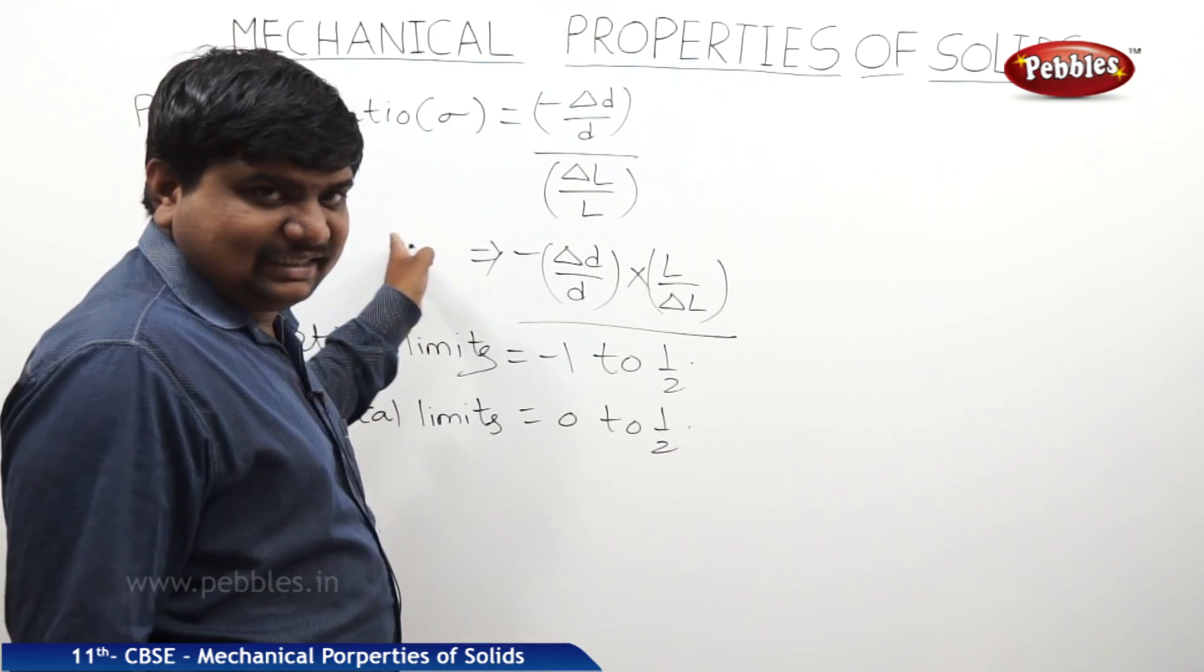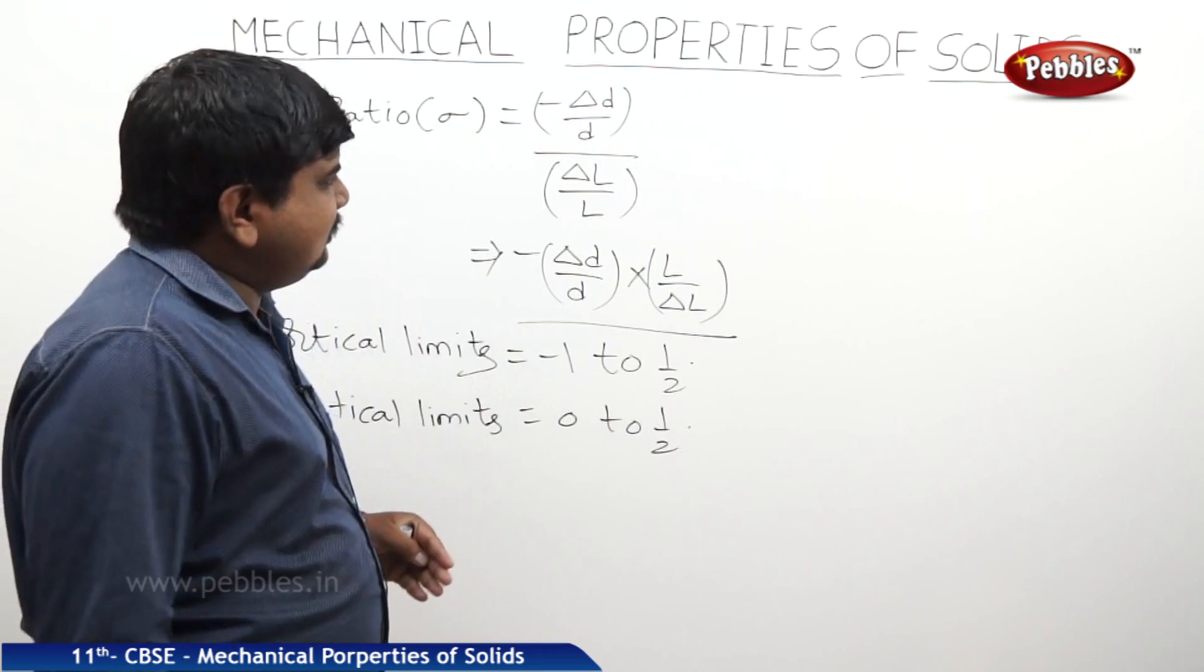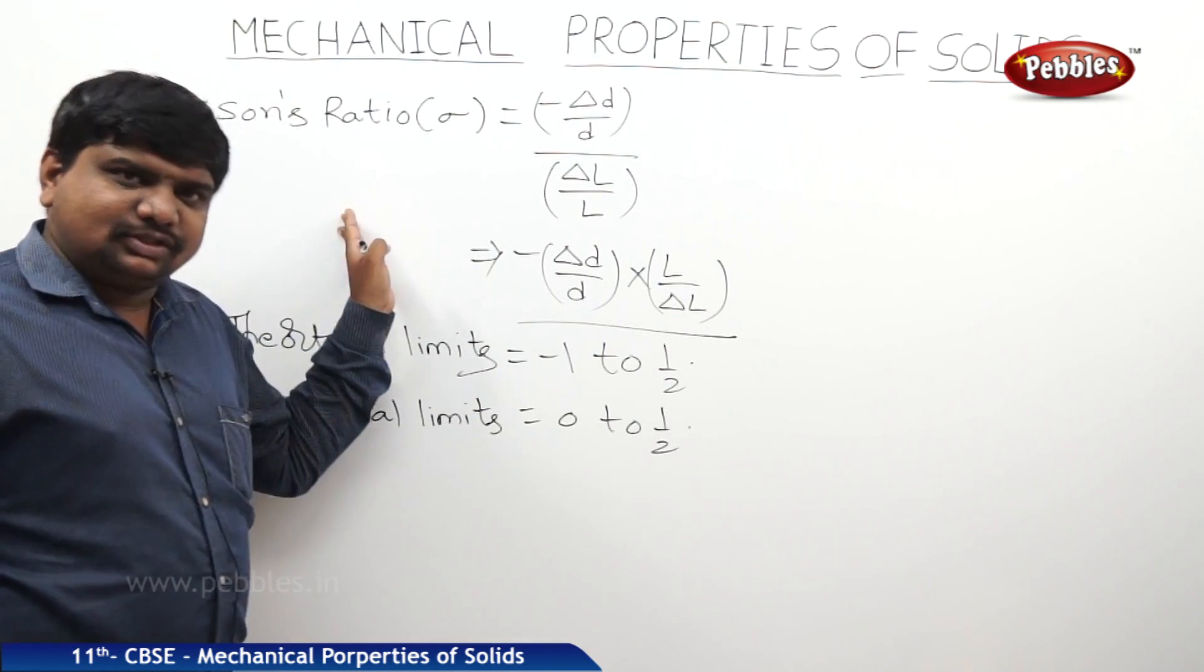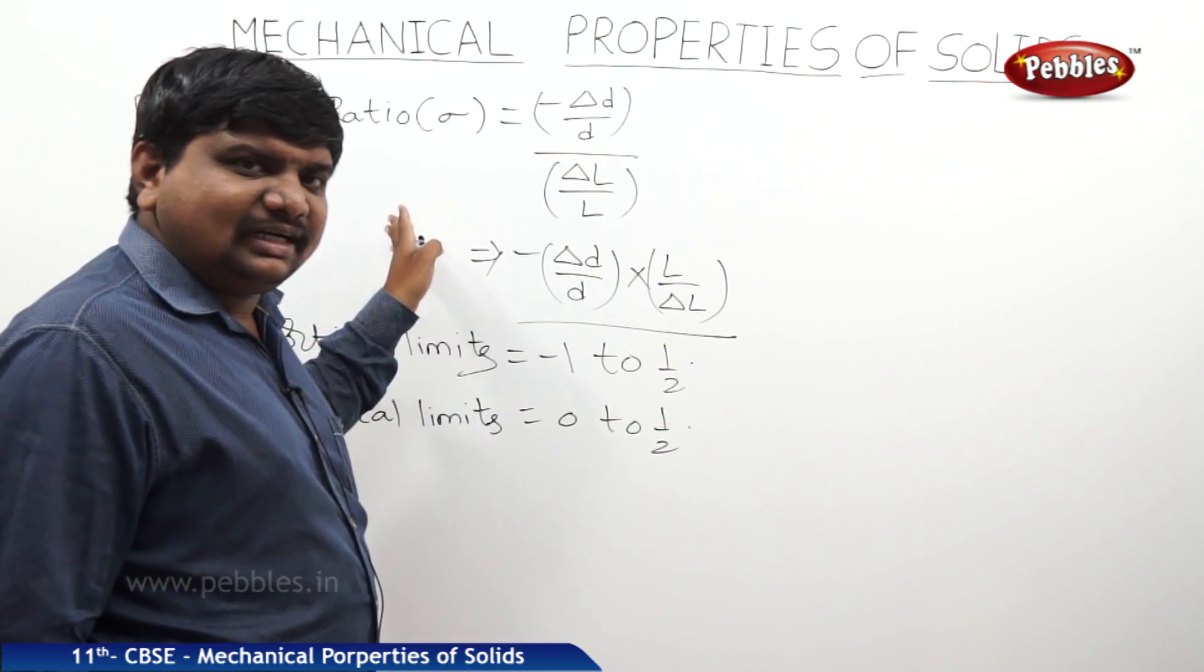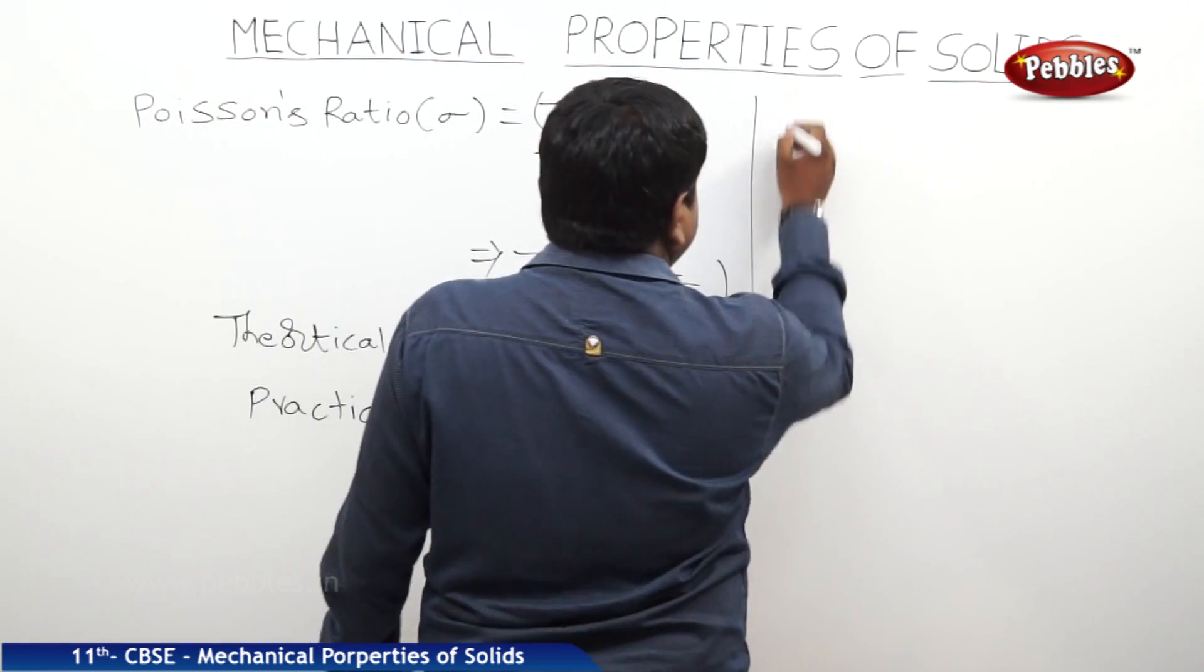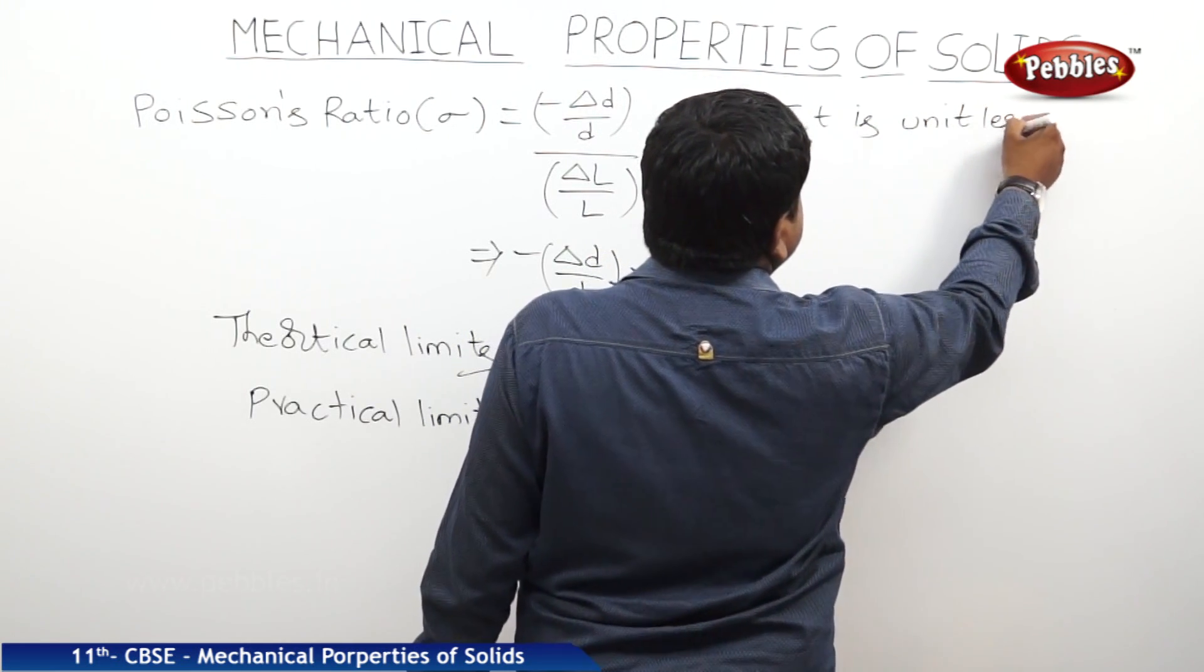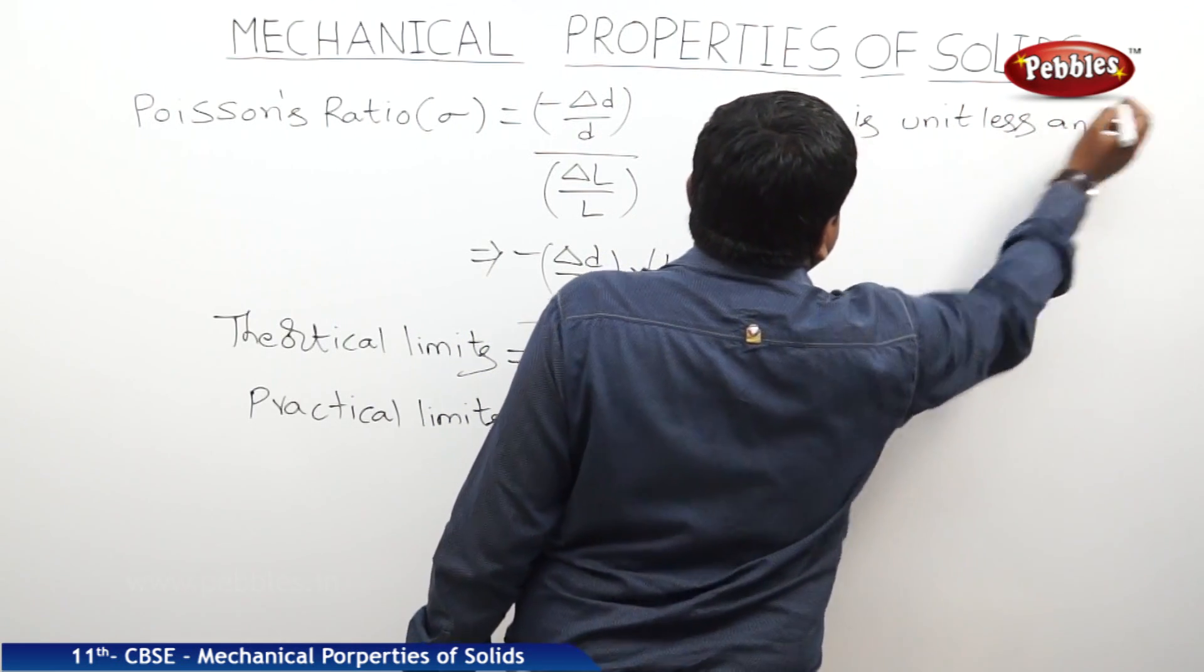Practical limits is 0 to half. Like that, Poisson's ratio also one of the unitless and dimensionless modulus of elasticity. So, it is unitless and dimensionless quantity.